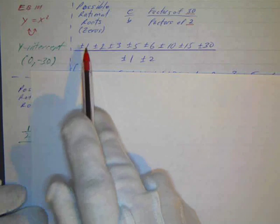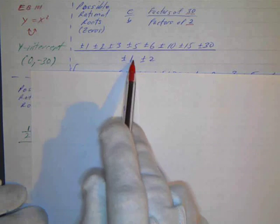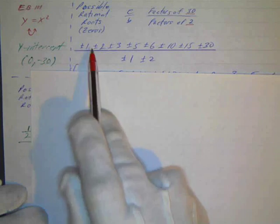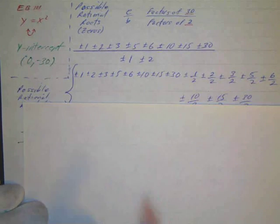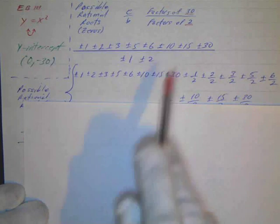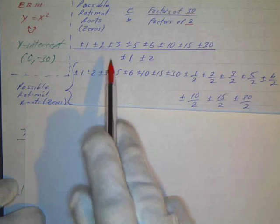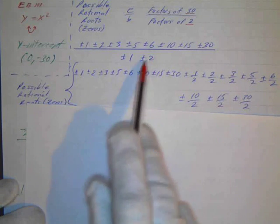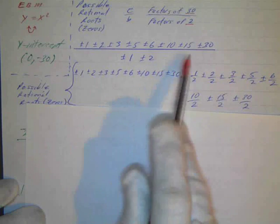So take all the combinations: 1 over 1, 2 over 1, 3 over 1, 5 over 1, 6 over 1, 10 over 1, 15 over 1, 30 over 1, and then 1 over 2. So I wrote those out. These are the numerators over 1 and these are the numerators over 2: 1 over 2, 2 over 2, 3 over 2, 5 over 2, 6 over 2, 10 over 2, 15 over 2, and 30 over 2.